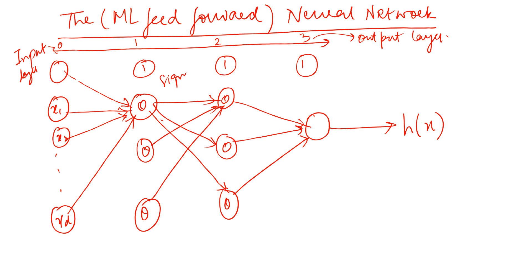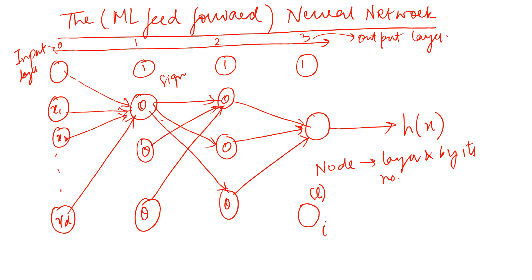A node is specified by its layer and by its number. For example, this node is denoted by L and I — meaning it is node number I in layer L. We can use both the input and output for this node depending on the layer number and position. We know that this is the input layer, this is the output layer, and the rest of the layers here are the hidden layers.